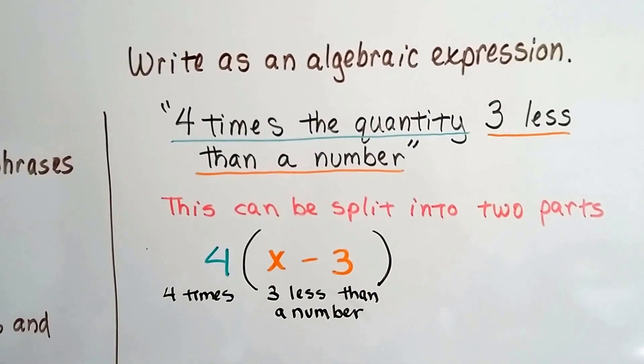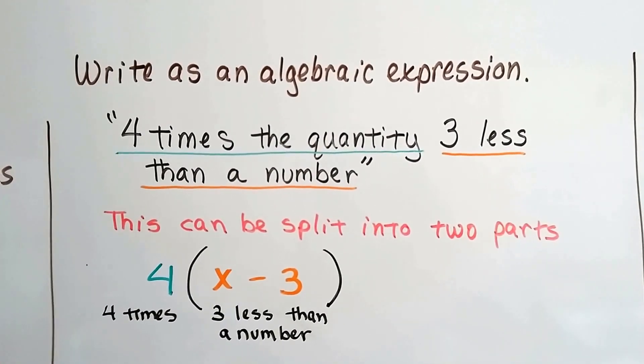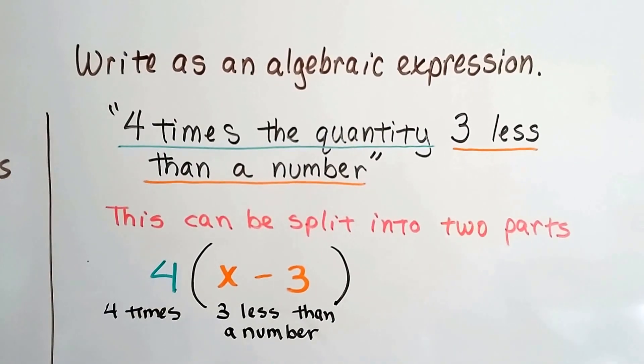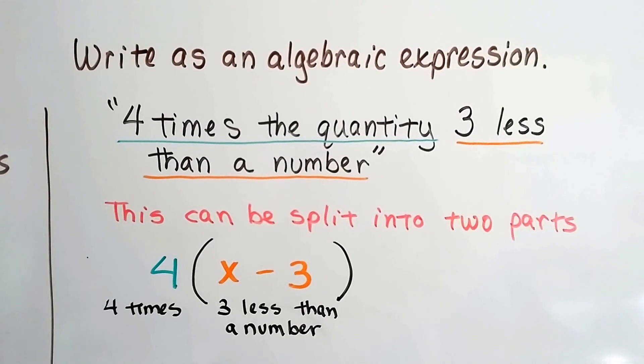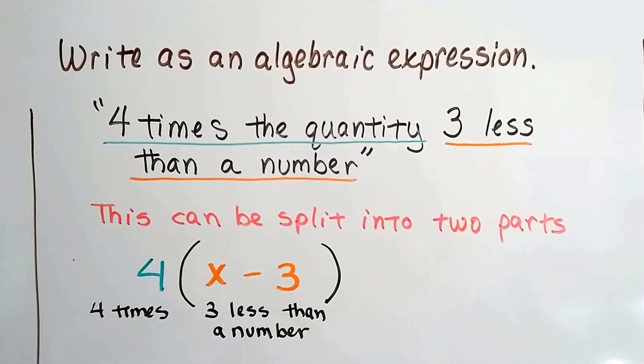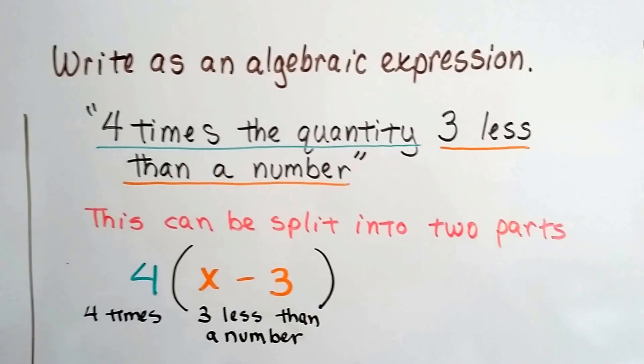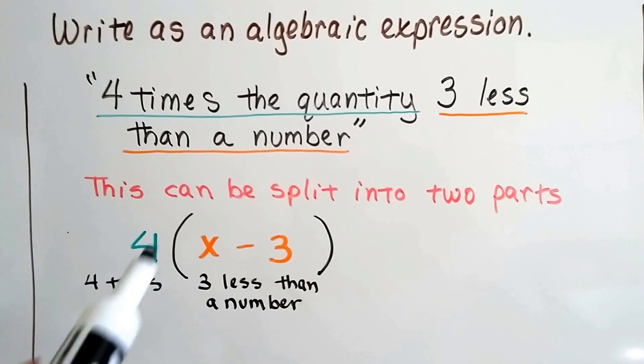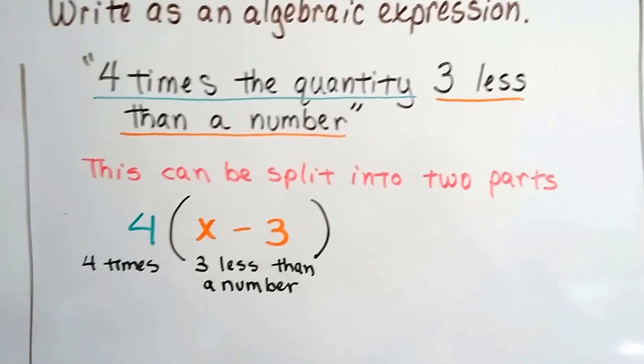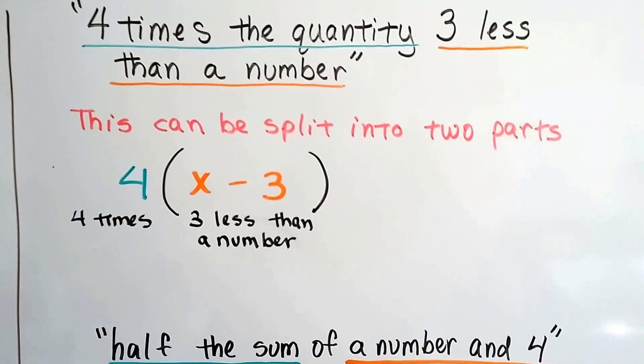To write as an algebraic expression, four times the quantity three less than a number, this can be split into two parts. We look at it as four times the quantity, and then you pause. Then you say three less than a number. The three less than a number is the x minus three. And four times that quantity would be four on the outside of the parentheses. That would be a distributive property expression.